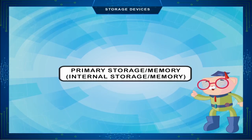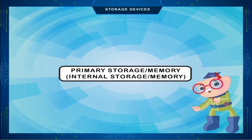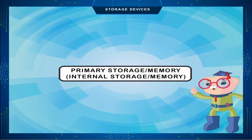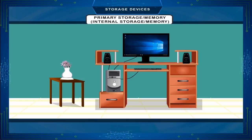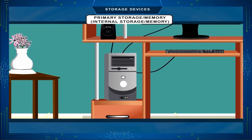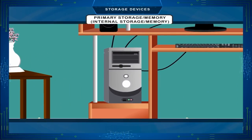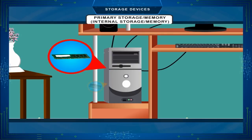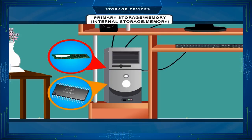Primary storage memory, or internal storage memory. Primary storage or memory is the memory of the computer itself. It is located within the CPU and is required for the actual working of the computer. It is essential to start the computer.